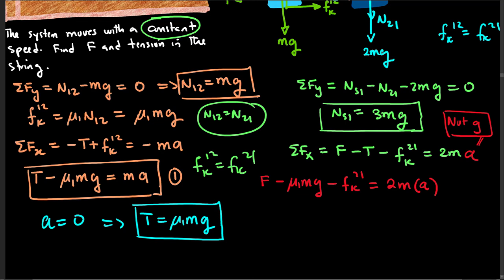And we know that Fk21 is equal to μ1 mg. What that implies is that F minus μ1 mg minus μ1 mg is equal to 0.